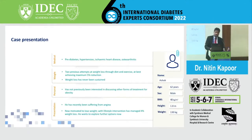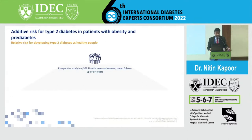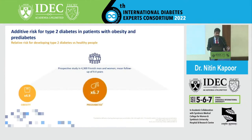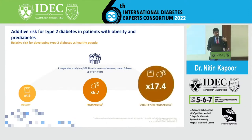We're seeing a patient with pre-diabetes and obesity along with hypertension and ischemic heart disease. We know that obesity per se is a risk factor for developing diabetes, and pre-diabetes is also a risk factor. But when we combine obesity in a patient who already has pre-diabetes, the odds are 17-fold — much, much higher.